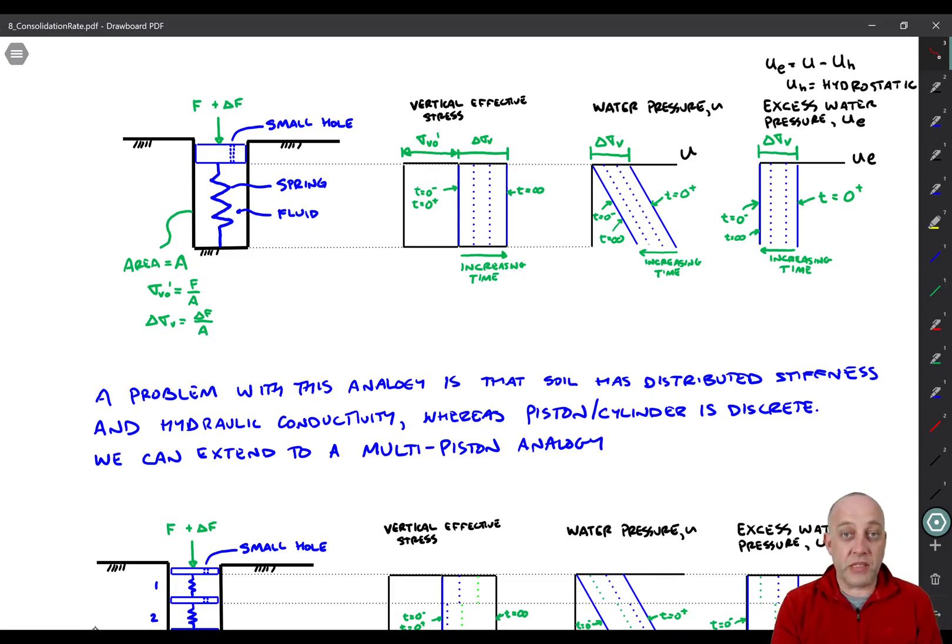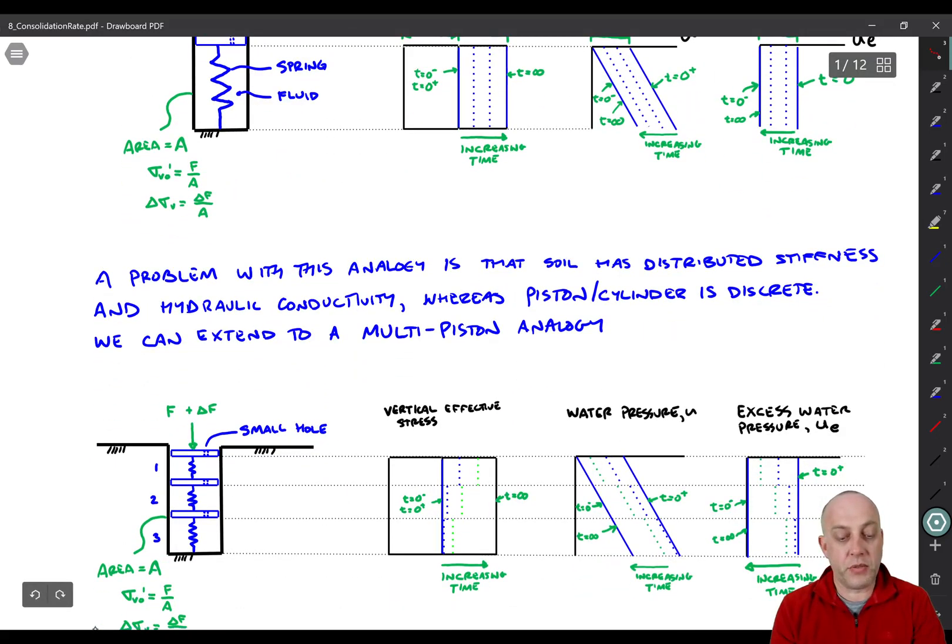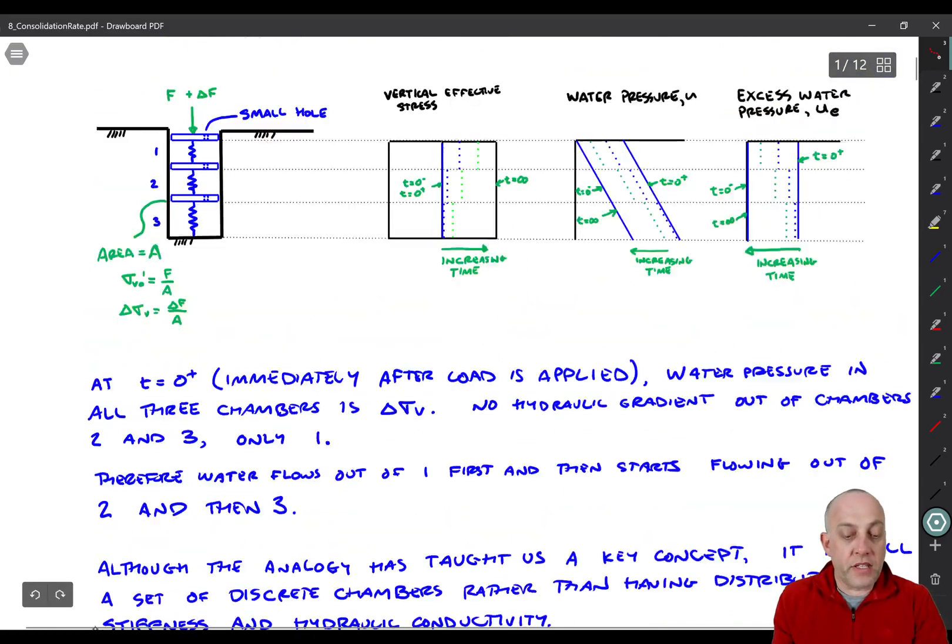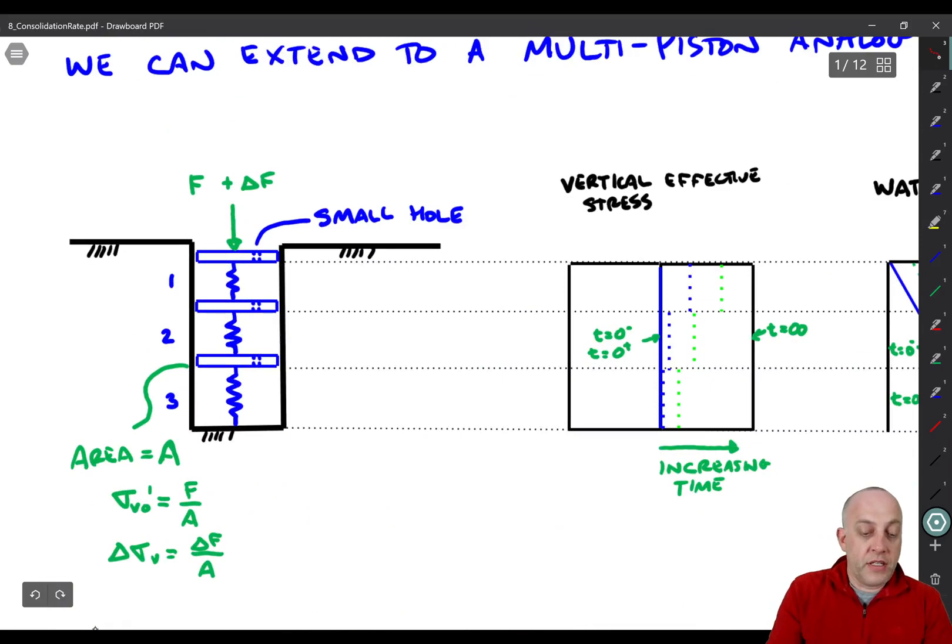So we're going to keep it discrete, but instead of one cylinder, without one cylinder, we'll have multiple pistons, maybe with three different chambers inside of that cylinder. So if we go to this analogy over here now, we still have this F plus delta F, everything is the same as before. But let's think about what happens. We're applying a load. Initially, all of the load is taken by the pore fluid in here. The pressure at this point is the same, the excess pressure at this point is the same as the excess pressure at that point.